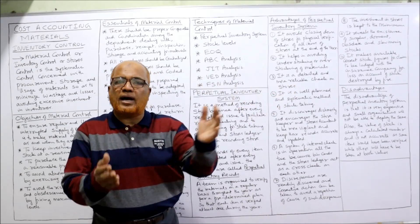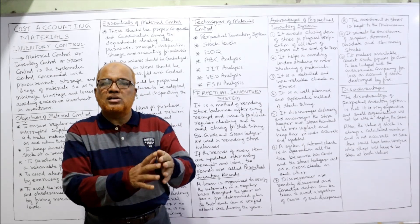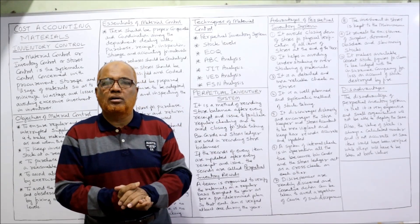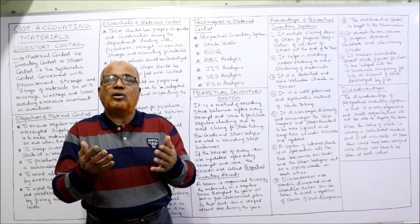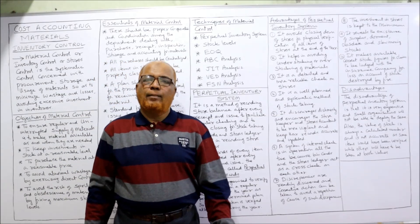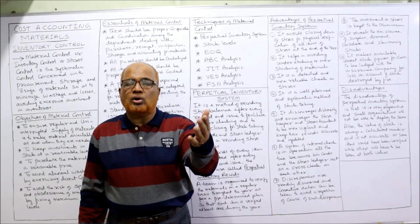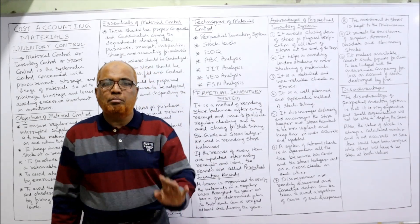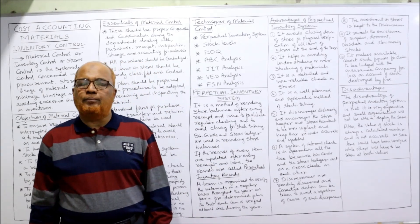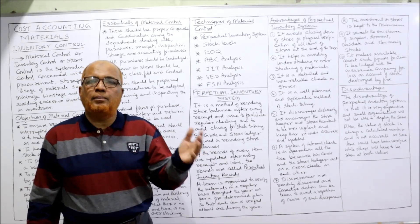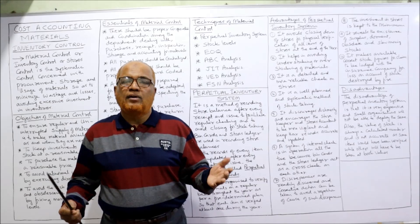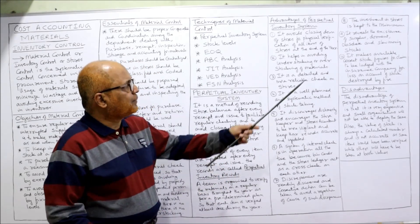Discrepancy means the difference between actual stock and recorded stock — for example, the recorded balance may show 100 units but on actual count it comes to 98 units. The causes must be found so the discrepancy is not repeated. Additionally, the perpetual inventory system keeps investment in stores to a minimum by preventing overstocking. It also reveals the existence of surplus, dormant, obsolete, and slow-moving stock, helping management identify which stock is dead stock, slow-moving, or dormant.